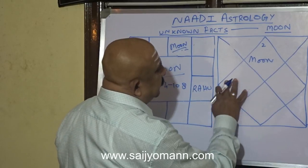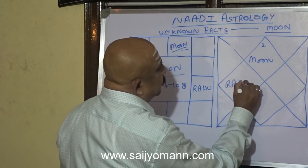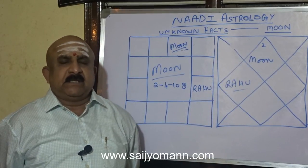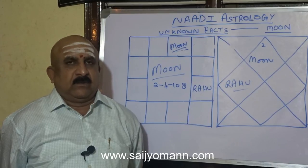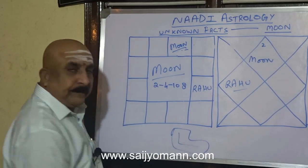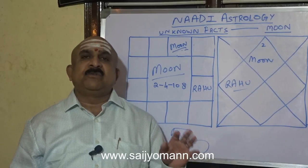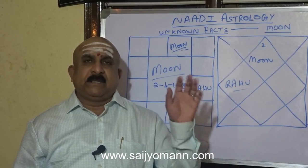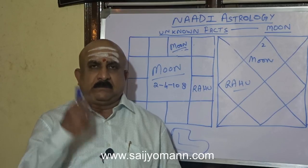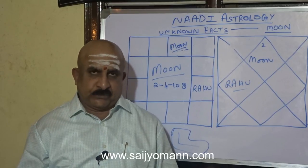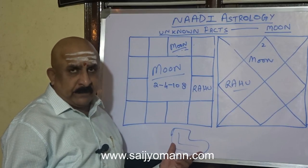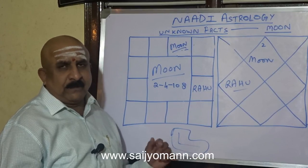Rahu in the 4th house from Moon: the mother's mother's house — the native's grandmother's house — will be in the shape of an L. There will be a lot of problems for the females. Wherever there is an L-shaped house, females will have a lot of tensions, problems, tears, and health issues. But the family will have a good name — such a house brings very good name for the family, but inside only the female folk will have problems.